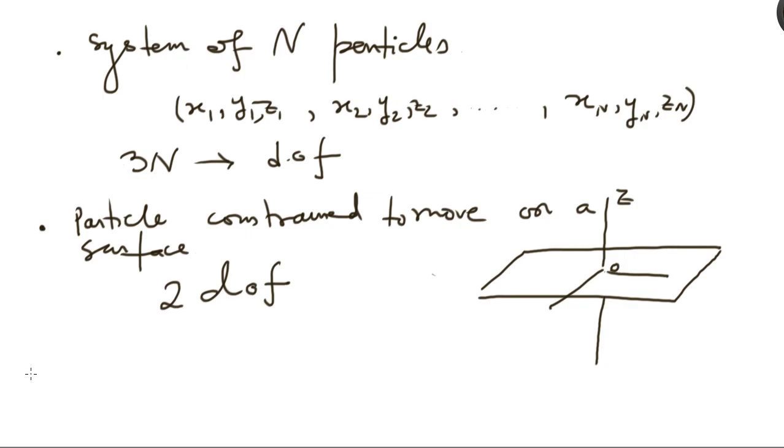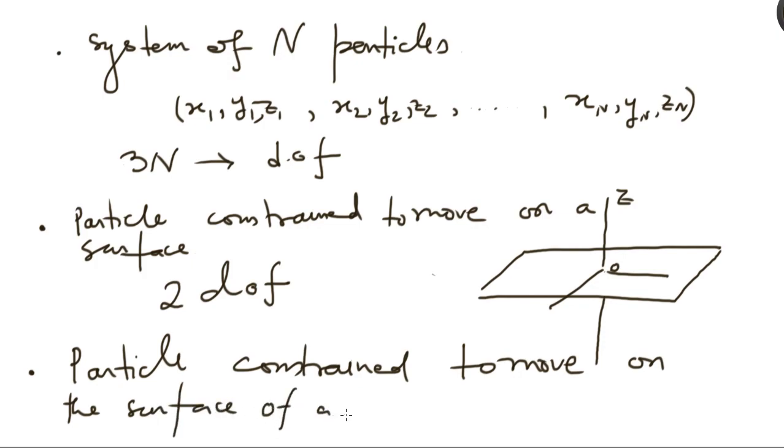How about a particle that is constrained to move on the surface of a sphere? This is a place where many students go wrong and they are not thinking correctly when they are finding out the number of degrees of freedom for this case. Usually they get three. They think that the particle is moving in three dimensions. So, it has three degrees of freedom. Well, let us see why that is not correct.